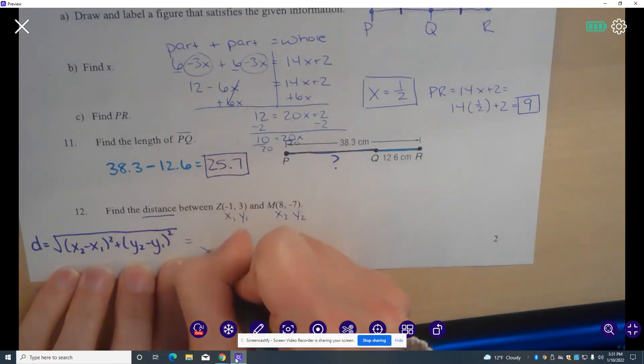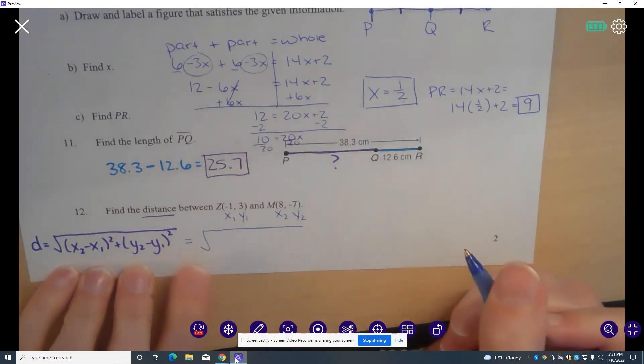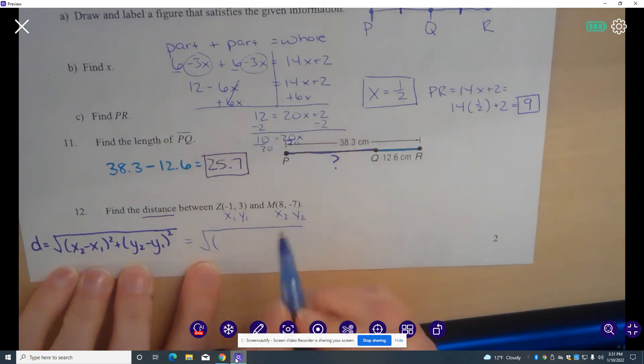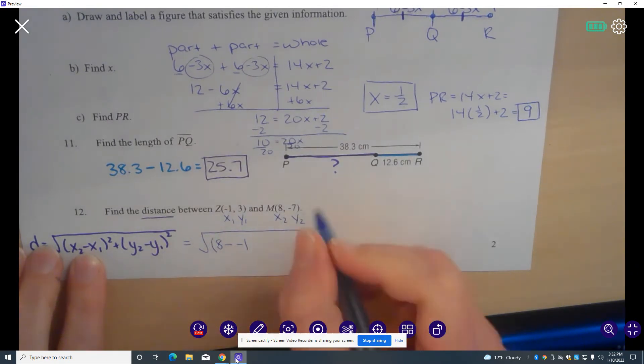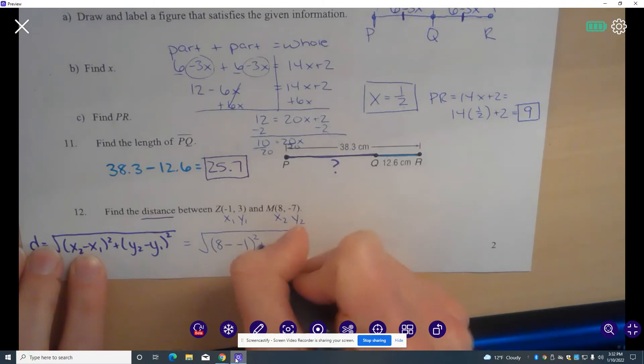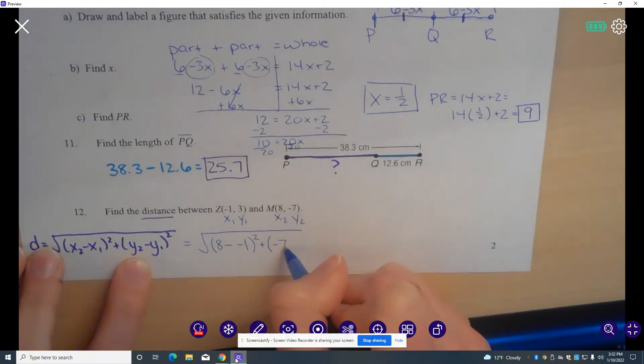So the distance between these two points, X2 is 8, minus X1 is negative 1. Watch out, there's a minus and negative there. Y2 is negative 7, minus Y1, which is 3.